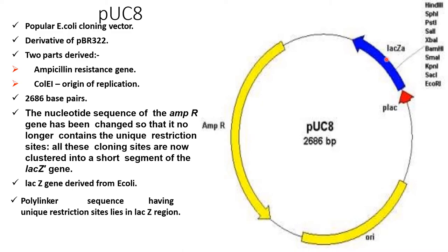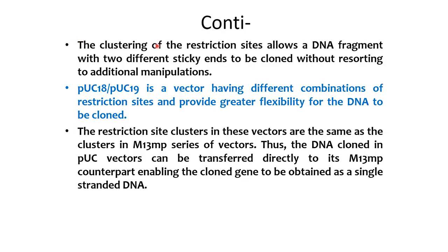All cloning sites are now clustered in the short segment of the lacZ gene, which was derived from E. coli. The polylinker sequence has a unique restriction site lying in the lacZ region. This clustering allows DNA fragments with two different sticky ends to be cloned without additional manipulation. POC18 and POC19 are vectors having different combinations of restriction sites providing greater flexibility for DNA cloning. DNA cloned in POC vectors can be transferred directly to M13MP counterpart vectors, enabling the cloned gene to be obtained as single-stranded DNA.